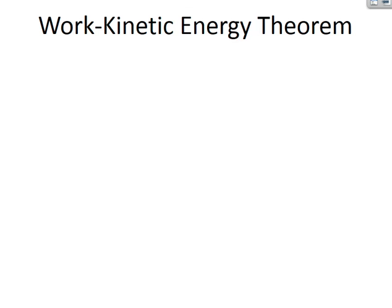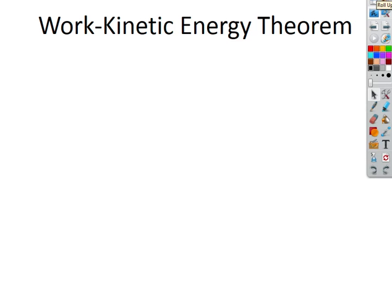We ended last lecture with a problem where somebody's pushing an object along a horizontal surface, and we can find the work done on the object. What does that translate to? What is that causing the object to do? If I start pushing this object, obviously I'm making it move faster and faster. So I'm adding energy to the object — specifically, I'm using work to transfer kinetic energy to the object.